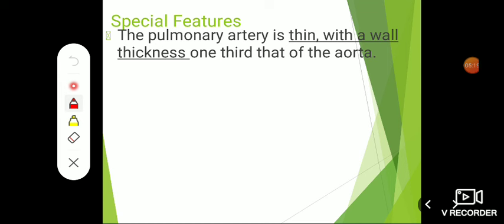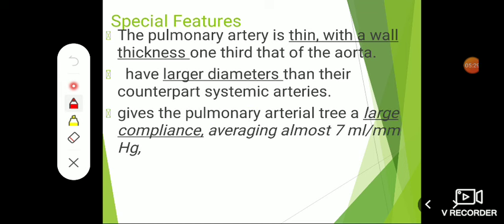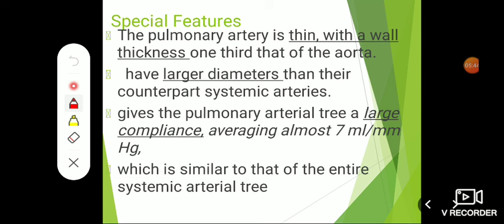Now let's discuss the first special feature of pulmonary circulation. Pulmonary arteries have thin walls — wall thickness is one-third that of the aorta — and a larger diameter than their counterparts in systemic arteries. This gives the pulmonary artery a large compliance, averaging almost seven ml per millimeter of mercury, so the percentage rise in pressure is much less compared to systemic arteries.